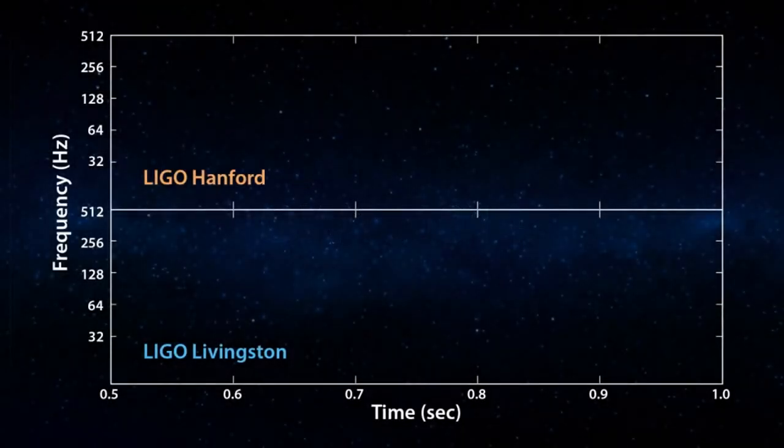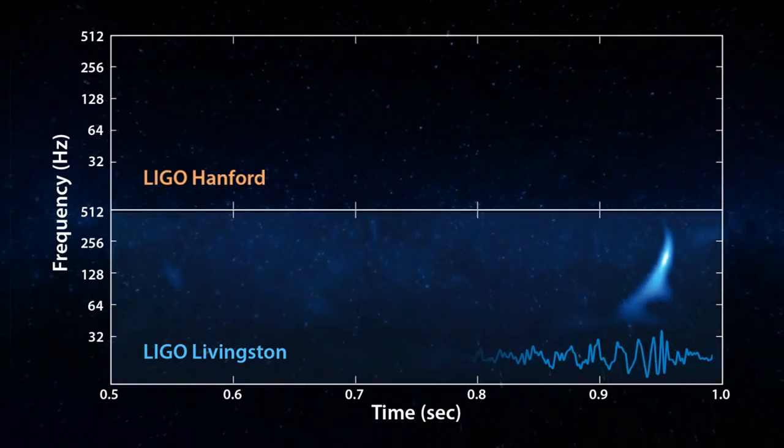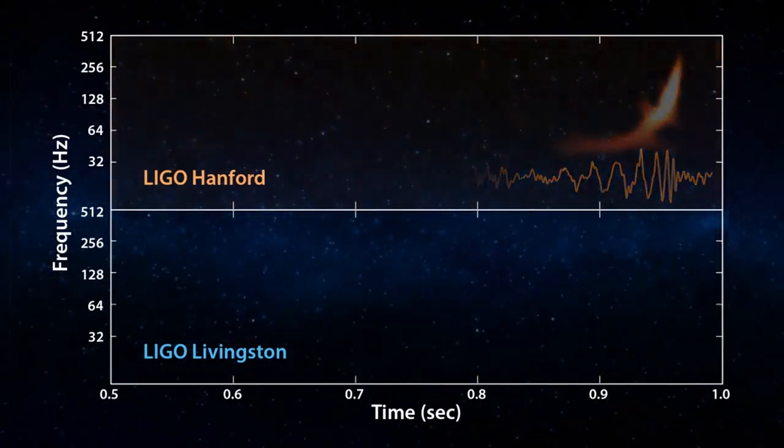At 9 hours, 50 minutes, and 45 seconds Coordinated Universal Time on the 14th of September 2015, a signal was detected by the LIGO detector in Livingston and 6.9 milliseconds later in Hanford.